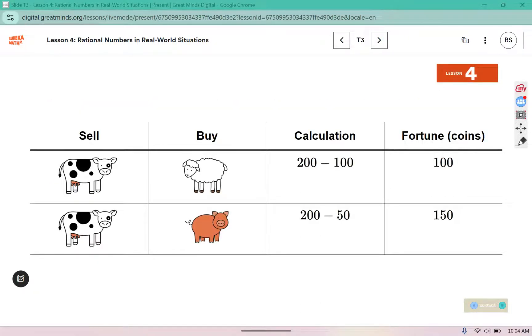So here we have the cow, the sheep, and the pig. So the cow, they sell for 200 coins, and the sheep, they purchased for 100 coins, leaving them with 100 in surplus, or 100 coins that they would consider fortune.